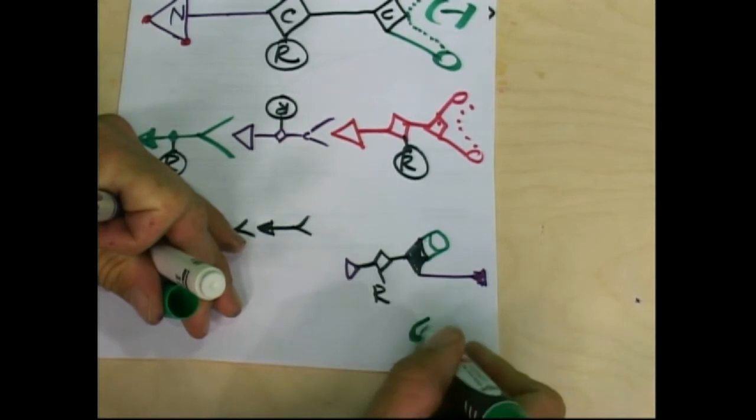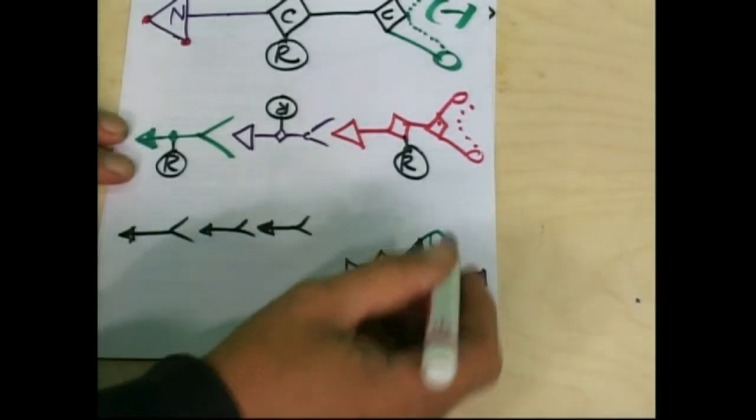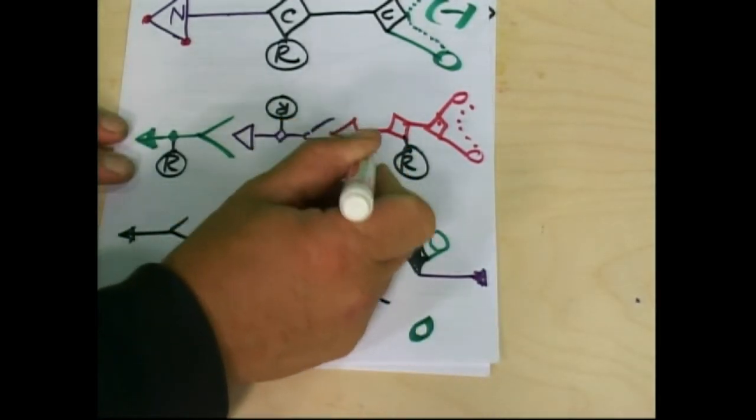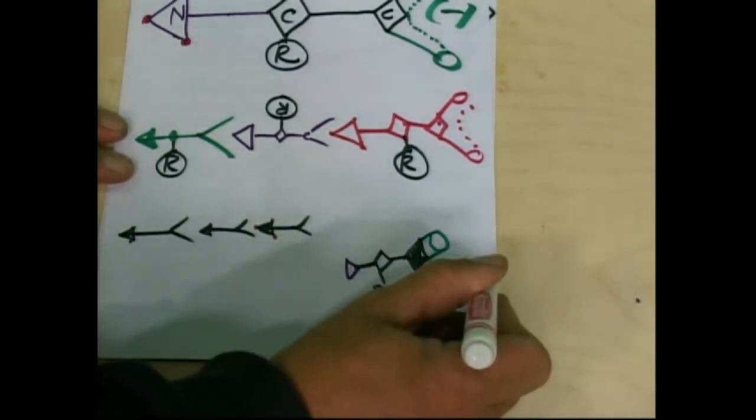So there's an O. The nitrogen, it's got three dots on it. One, two, three. One, two, three. One. It's only got one when it's bound.